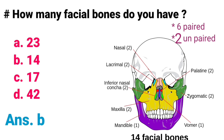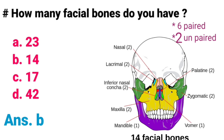How many facial bones do you have? A) 23, B) 14, C) 17, D) 42. Correct answer is option B, 14. Every individual has 14 facial bones: 6 paired bones and 2 unpaired bones. The 6 paired bones are: Nasal, Lacrimal, Inferior Nasal concha, Maxilla, Palatine, and Zygomatic. The 2 unpaired bones are the Mandible and Vomer. So in our face there are a total of 14 facial bones.